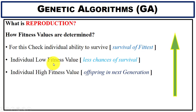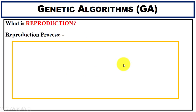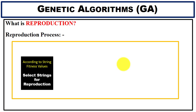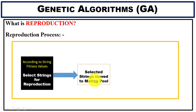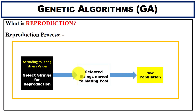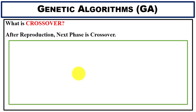According to the fitness value, we select strings for reproduction. The selected strings then move to the mating pool, and in the end we have a new population. Now we will see the next step, which is crossover.